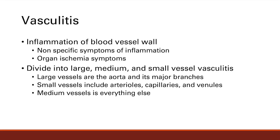The next topic is vasculitis — inflammation of the blood vessel wall. If you have inflammation of the blood vessel wall, you're going to get non-specific symptoms of inflammation overall, and you can get organ ischemia because inflammation of the vessels prevents blood flow to that organ. We'll divide vasculitis into large, medium, and small.